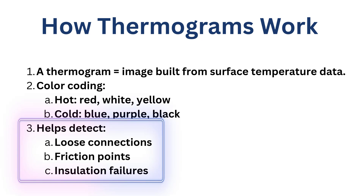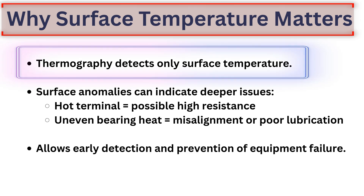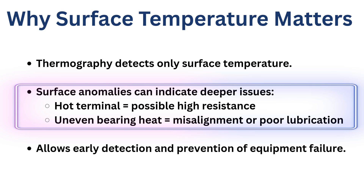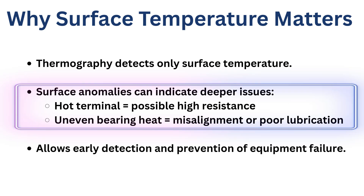One important point to remember is that thermal imaging only shows us the surface temperature — it is not telling us the internal temperature the way an RTD would. It only gives you the reflection of the heat on the external body of that object. However, if any changes or abnormalities happen inside the equipment — if heat is generated inside the equipment — we will either see a hot spot or uneven heat on the surface due to misalignment issues or lack of lubrication.